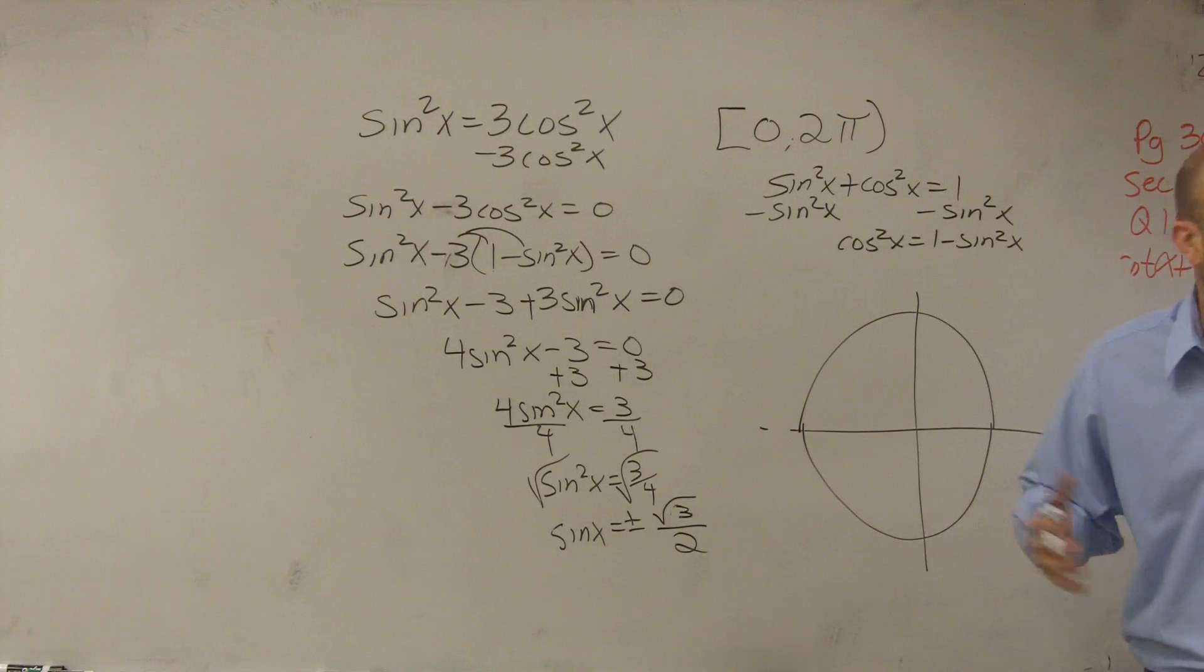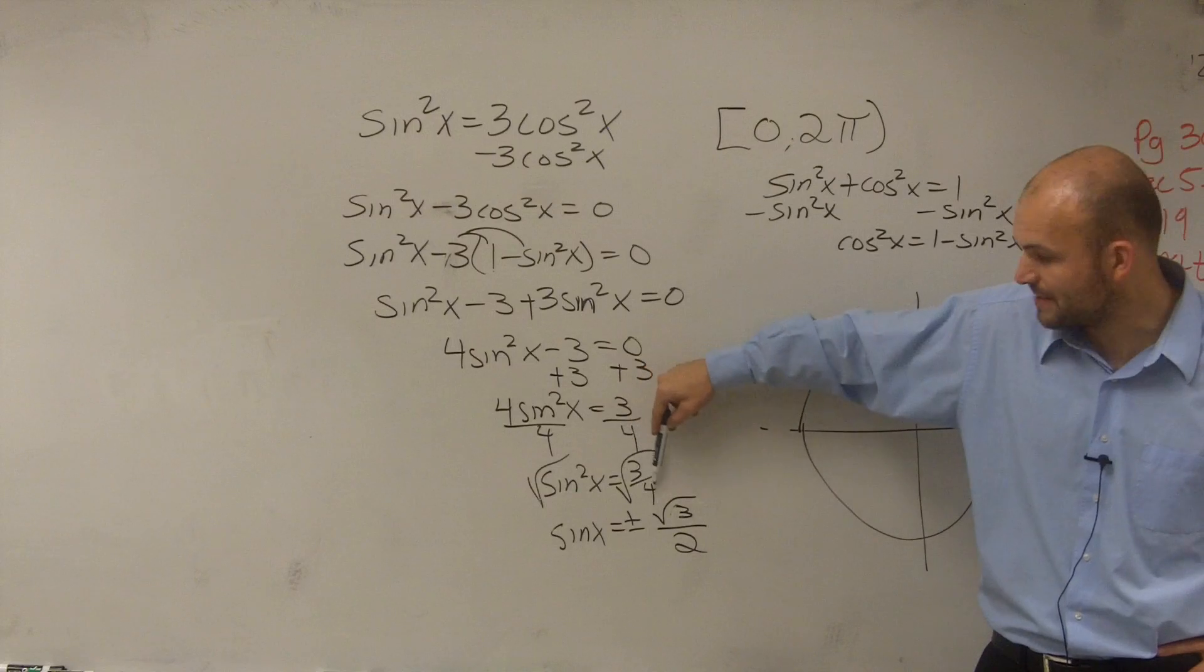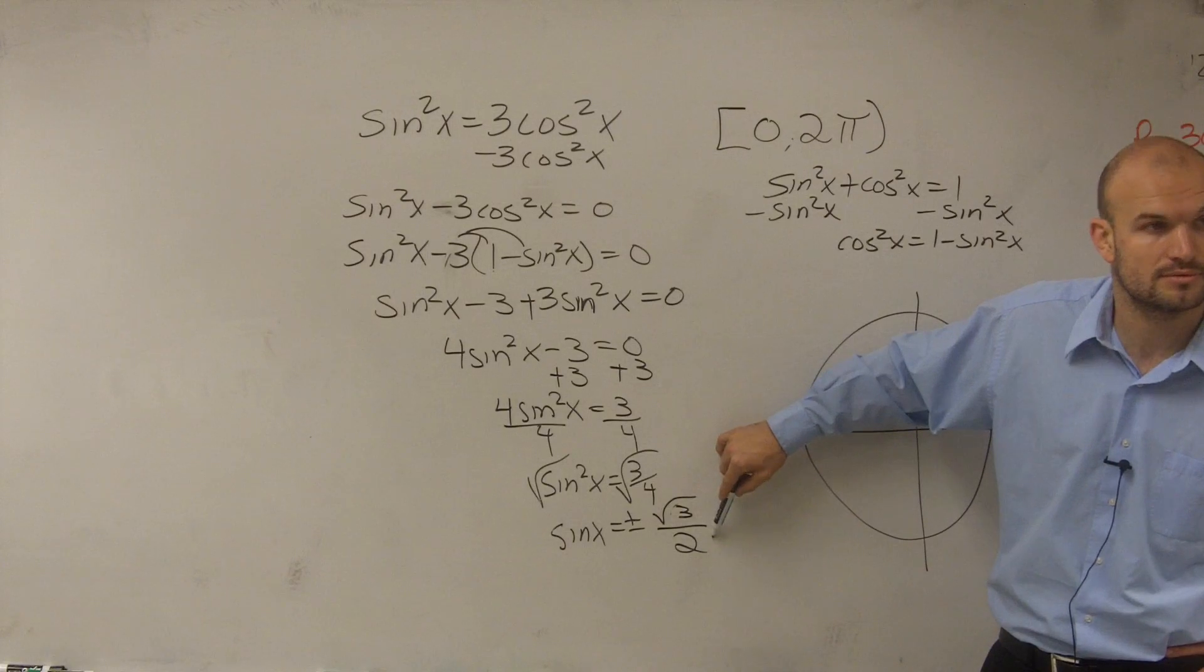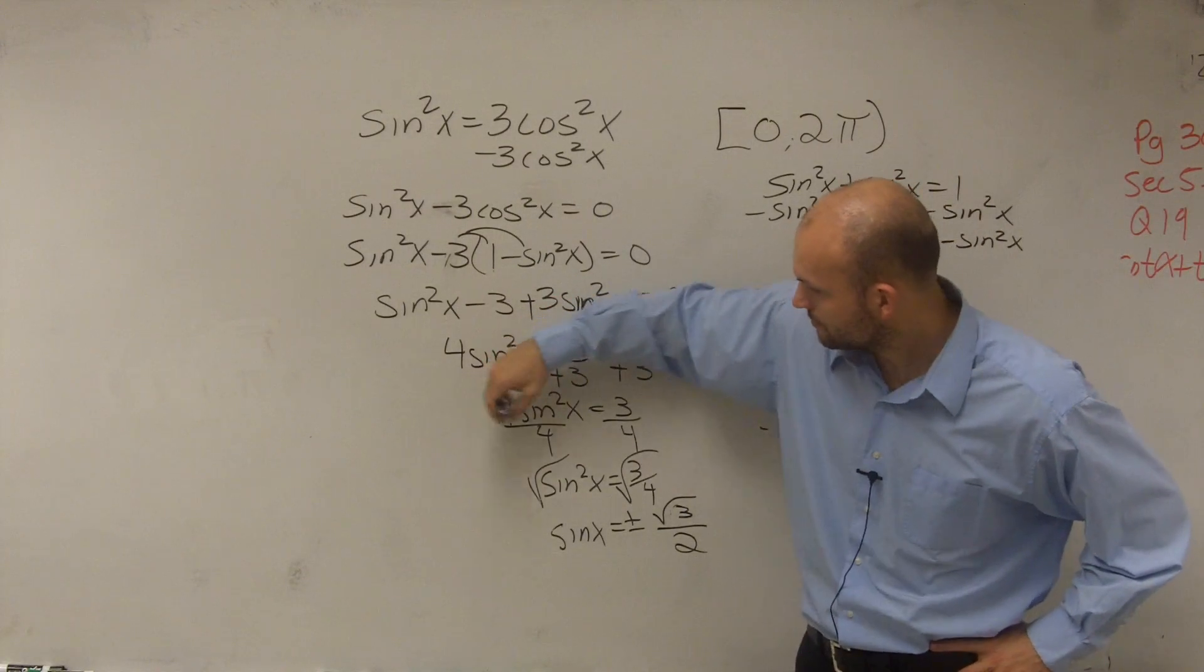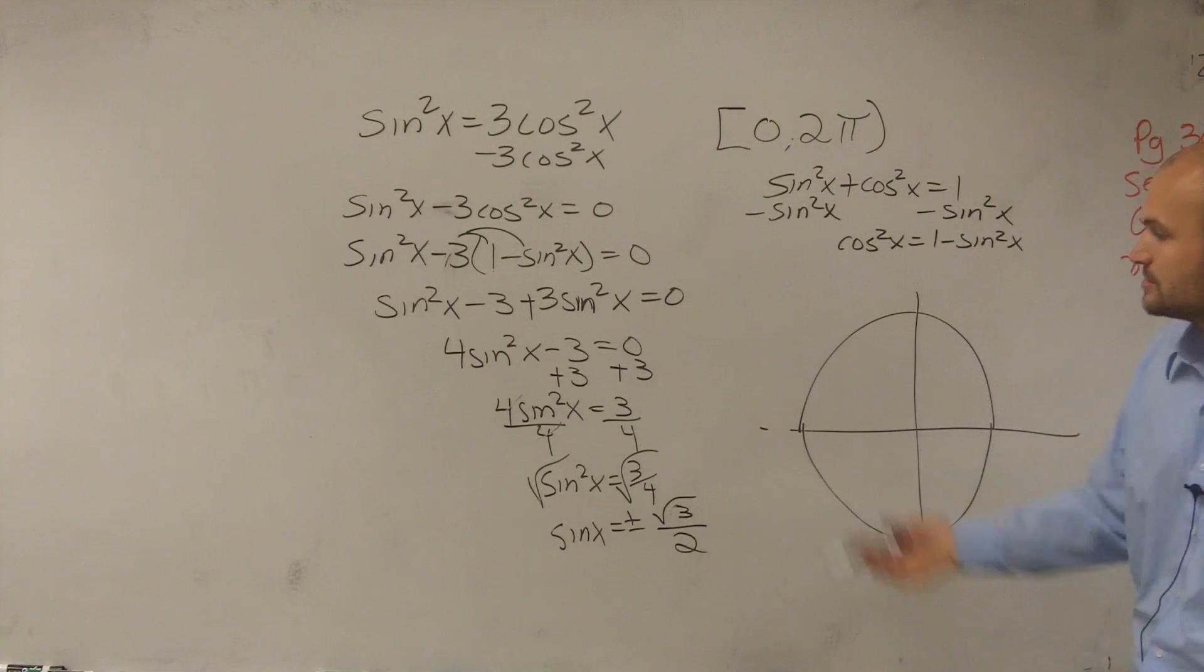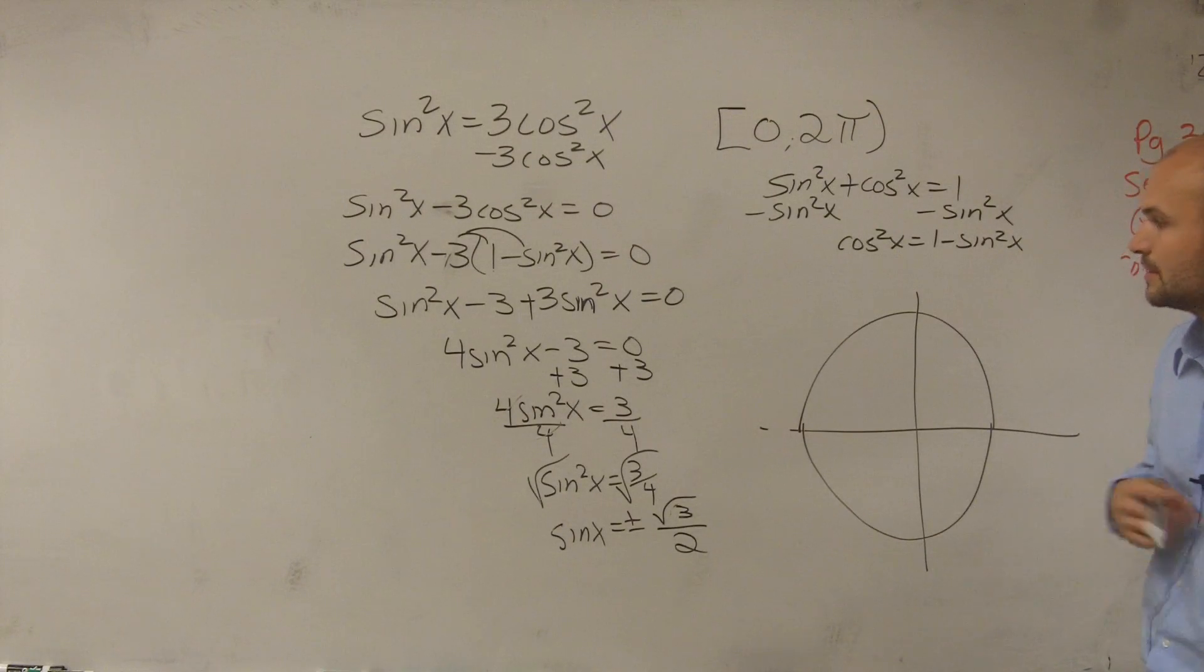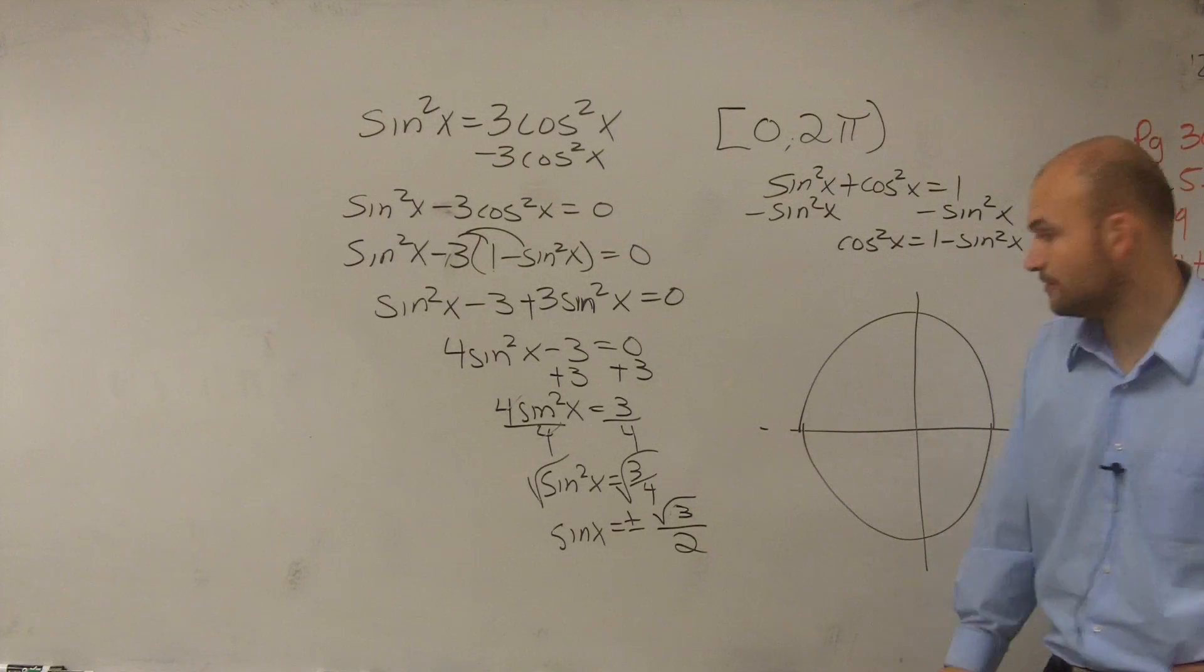So now I just need to find all the values when my sine is equal to plus or minus the square root of 3 over 2.